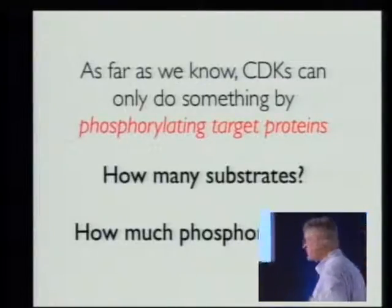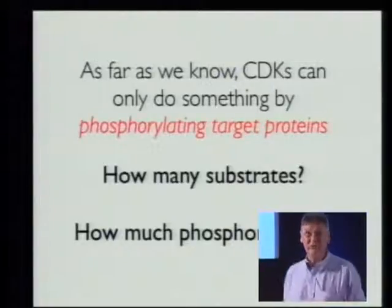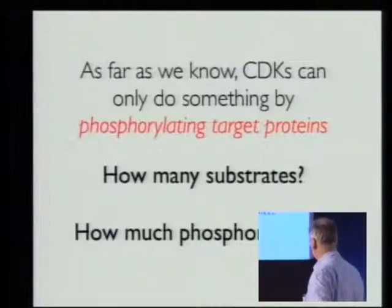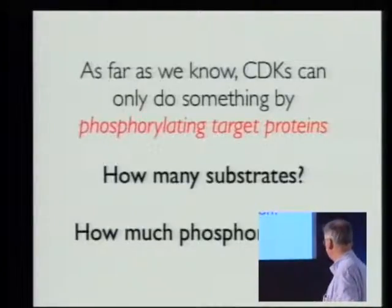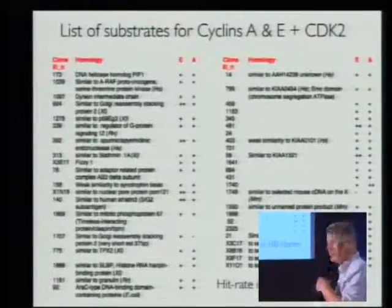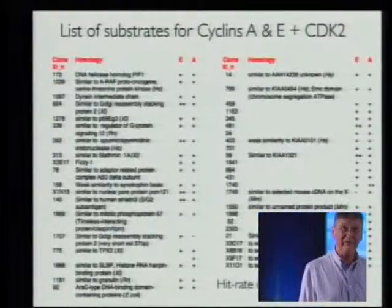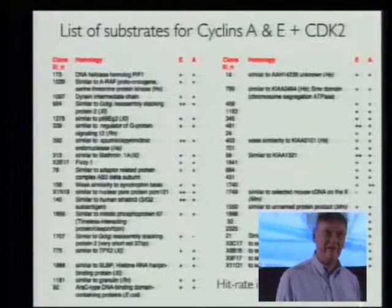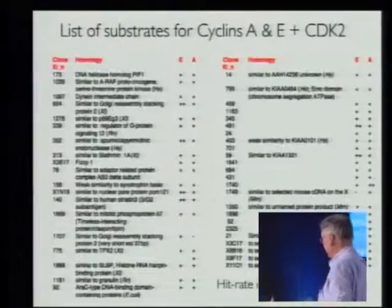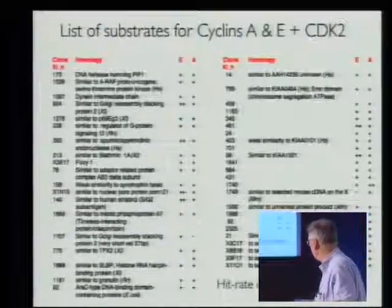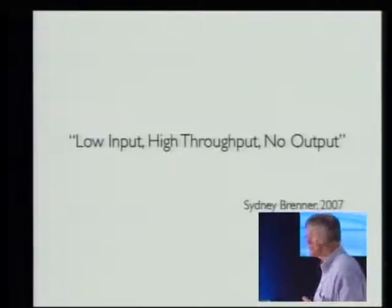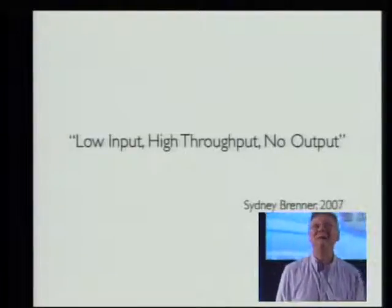This turns out to be a miserable kind of question. It's a very obvious question to ask, but it's a very difficult question to answer. Over the years, I and many other people have tried to answer this question and we've stopped trying because it's so boring. You get this list of substrates and it really doesn't help you understand the control of anything whatsoever — it conforms very much to what Sidney Brenner has called low-input, high-throughput, no-output research.